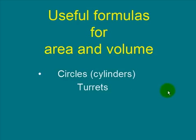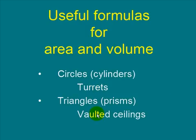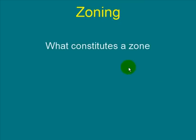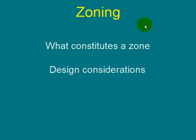We're going to give you some formulas for area and volume because a lot of houses have turrets now. A lot of them have vaulted ceilings, so you have to understand prisms. Zoning — what constitutes a zone — we'll cover some important considerations, though this is not a zoning course in detail.